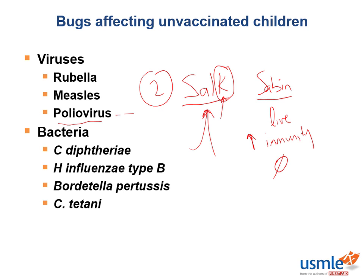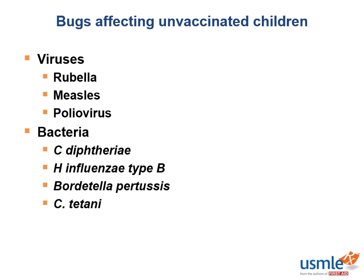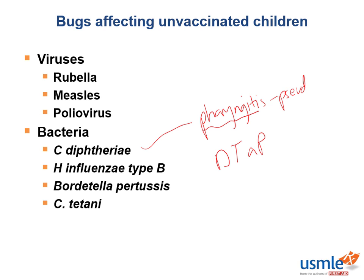Moving on to bacteria — the main symptom seen with Corynebacterium diphtheriae is that severe pharyngitis. The DTaP vaccine protects against this. The characteristic finding of a patient with diphtheria is pseudomembranous pharyngitis — you see those pseudomembranes in the throat of a child.